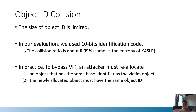The size of the object ID is limited, so the entropy of object IDs is also limited. Therefore, in theory, there can be object ID collisions. In our evaluation, we used 10 bits of identification code, so the collision ratio is about 0.09%. However, we could successfully defeat all known use-after-free attacks in the Linux kernel. While 0.09% may not seem very low, we believe it will still be very difficult for an attacker to bypass the mitigation in practice.